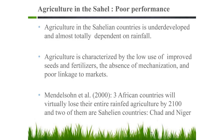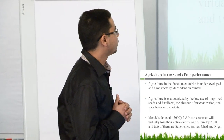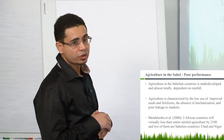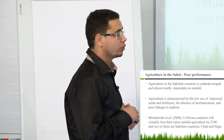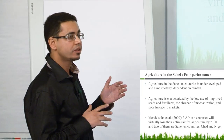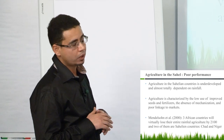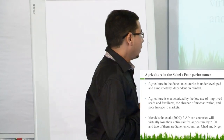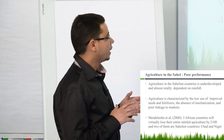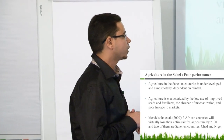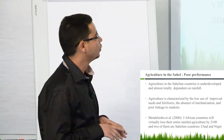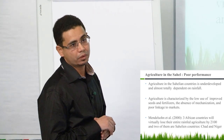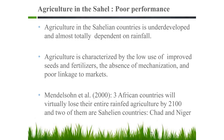About agriculture in the Sahel: agriculture is really very underdeveloped. There is low use of improved seeds, low use of fertilizer, and an absence of mechanization, so productivity is really very low in the region. This is why there may be a problem of food security. A very interesting study by Mendelsohn shows that by 2100, some countries in the region — Chad and Niger — will lose all their rain-fed agriculture, which will be a huge problem for feeding their own population.